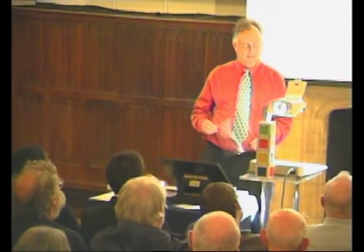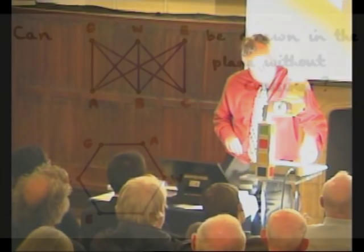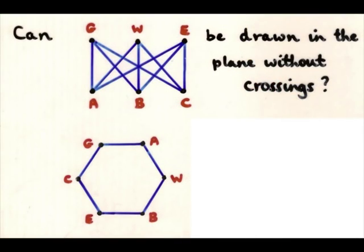And the answer to that is no, and it's quite easy to see this. Supposing you can draw this without crossings, you notice that you've got a hexagon: G to A to W to B to E to C, back to G again. So you can certainly draw that in the plane. And then the question is, can you fit in the other three edges?